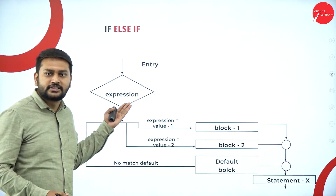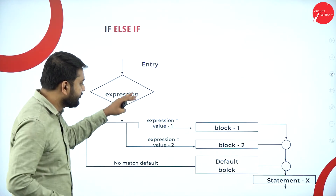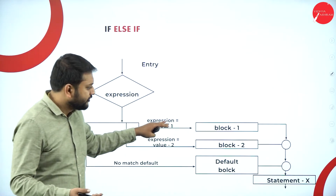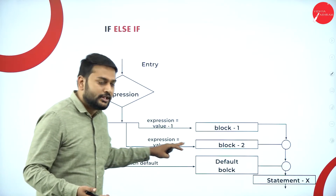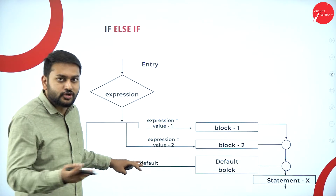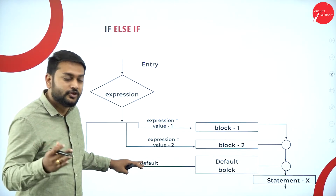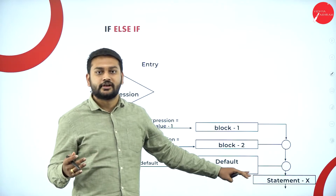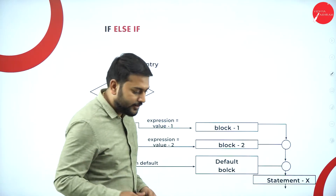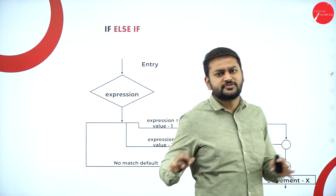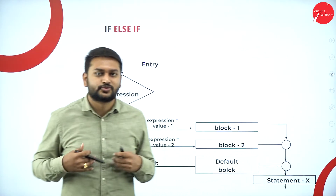Looking at the flowchart: if the first expression is true the first block is executed, if the second expression is true the second block runs, and so on. If none of the conditions match, the else block at the end will be executed. That's what you need to remember.